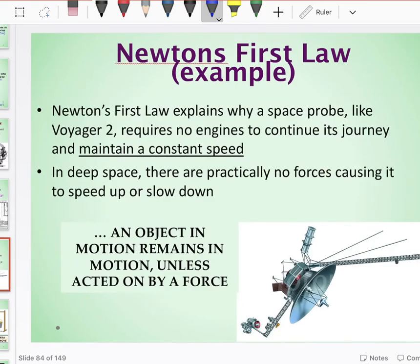So this is an example here. In space, there are very almost negligible forces of friction. So space probes, they're actually able to continue moving at a constant speed after their initial propulsion. Because an object in motion remains in motion unless acted on by an outside force.